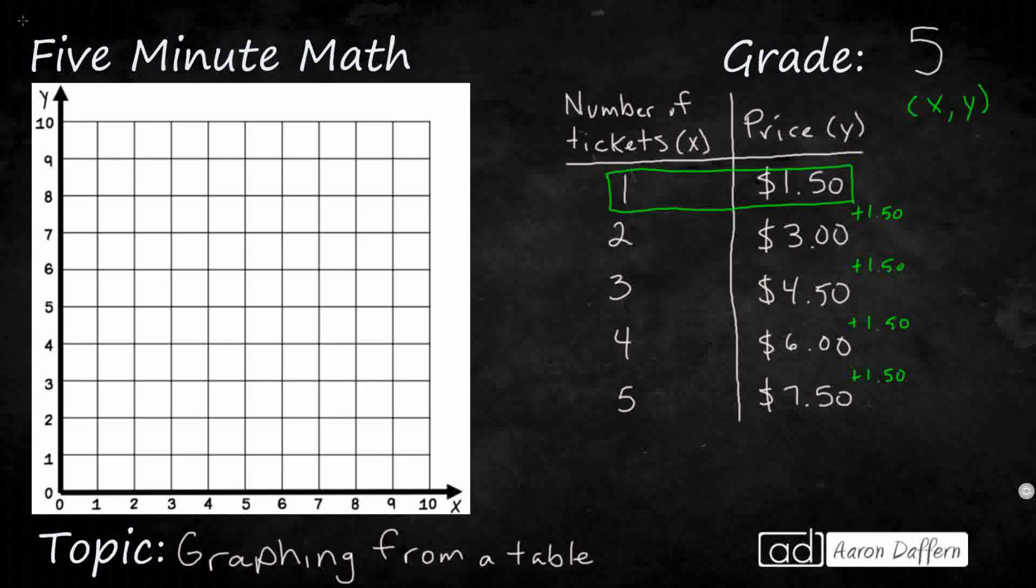Our first value is going to be the x value, and that is our horizontal value, so we're going to go side to side. Our second value is our y value, that is our vertical value. We're going to go up and down there.